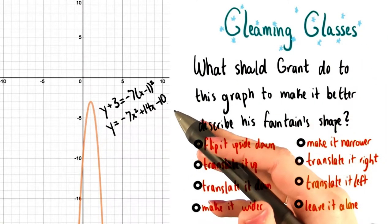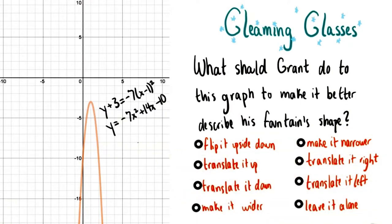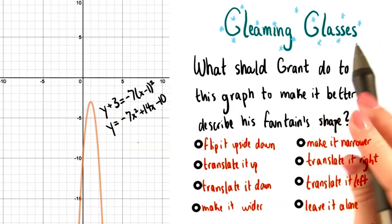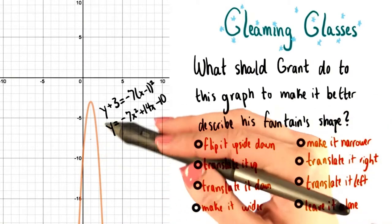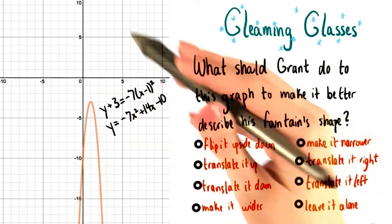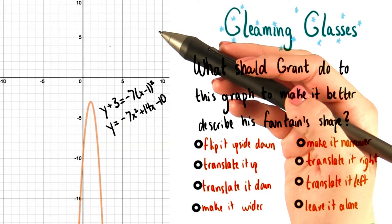So what do you think is wrong with Grant's equation and his graph right now? There's one single thing that we can do to this graph that would fix the entire problem that we're having, the mislocation of the horizontal and vertical coordinates of the water in Grant's fountain.